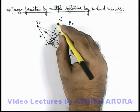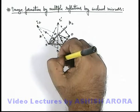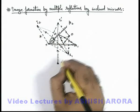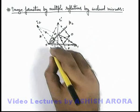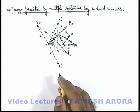Now this image will act as an object for mirror M1 and another image will be obtained at the same distance behind mirror M1, say I2 prime, and this will also be located at a distance x from the intersection point of mirrors.